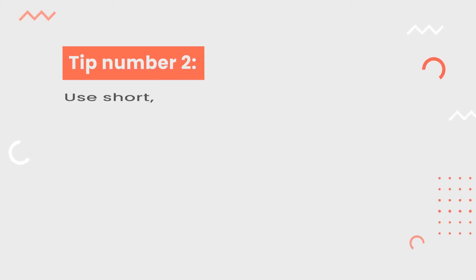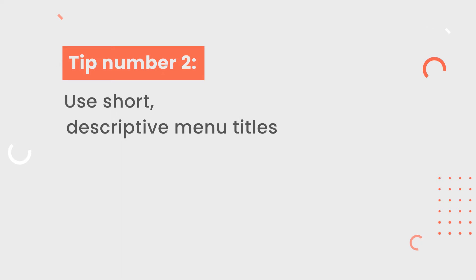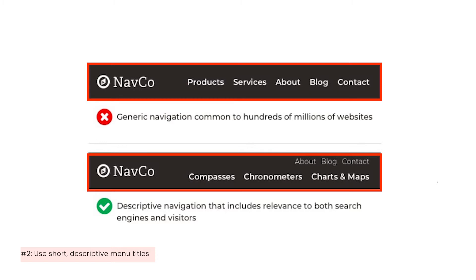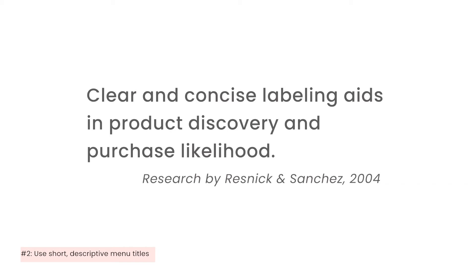Tip number 2: use short, descriptive menu titles. Try to avoid abstract names or brand names on your menu titles, since it may confuse the user with the question: what is in it for me if I click this link? If they do not see what they are looking for, they will hit back immediately. Moreover, research by Resnick and Sanchez in 2004 found that the quality of labels had a great effect on the number of products customers were able to find. Thus, clear and concise labeling can go a long way in aiding product discovery and purchase likelihood. Also, it saves space on the website and makes your website look clear and clean.